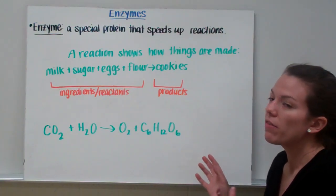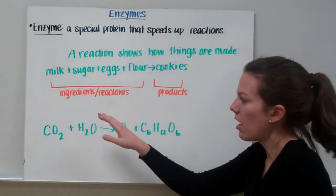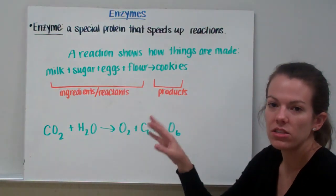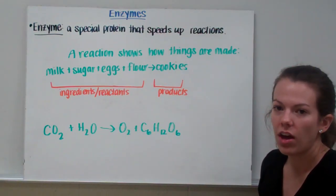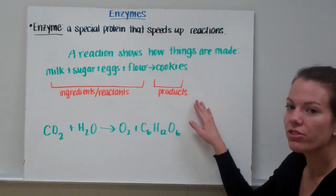So in a reaction, whatever's going in, or the ingredients, go to the left. We call those the ingredients or the reactants. That's what we're putting into the reaction. Now this arrow shows that something is changing, and that shows what's made. We put whatever's made on the right side, and those are called our products.